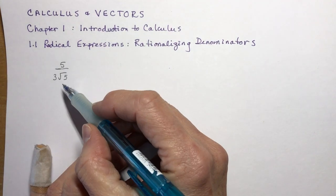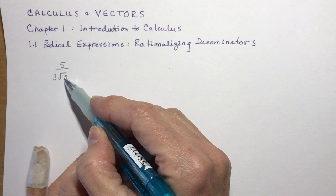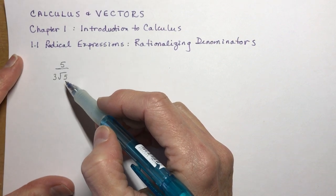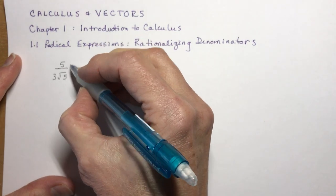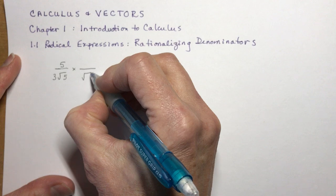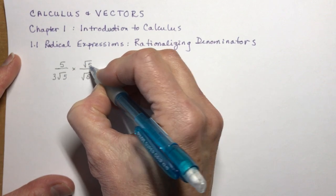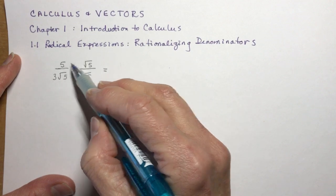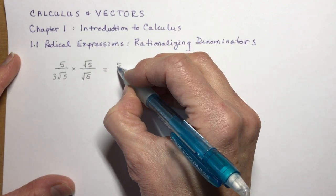Today we're going to rationalize this denominator. So I have 5 over 3 root 5. Now you know that in order to rationalize a denominator, you need to multiply by root 5. So if I multiply the denominator by root 5, I have to do the same in the numerator. And when I multiply those out — five times, that's like 1 root 5, so that's 5 root 5s.